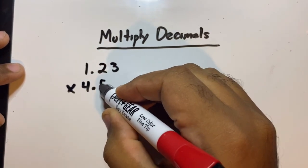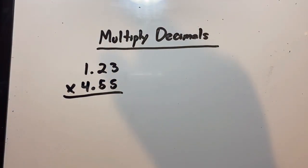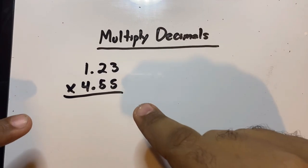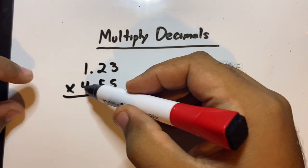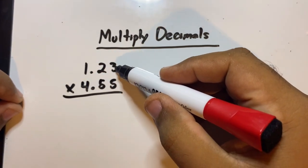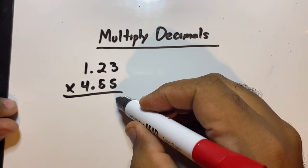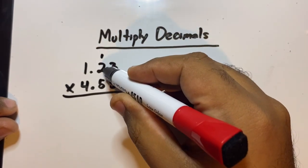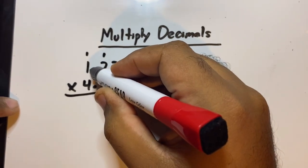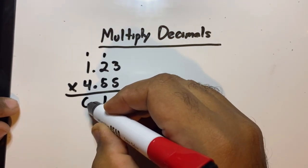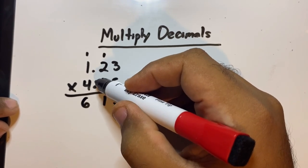You guys need to practice your multiplication tables — if not, this is going to be really difficult. So we'll start normal. Remember the rules: each of the bottom numbers has to be multiplied to each of the top numbers. We'll go in order. Five times three is 15. Five times two is ten, plus the one is eleven. Five times one is five, plus the one is six. Do not touch the decimals yet — there's a rule for this, leave them alone.